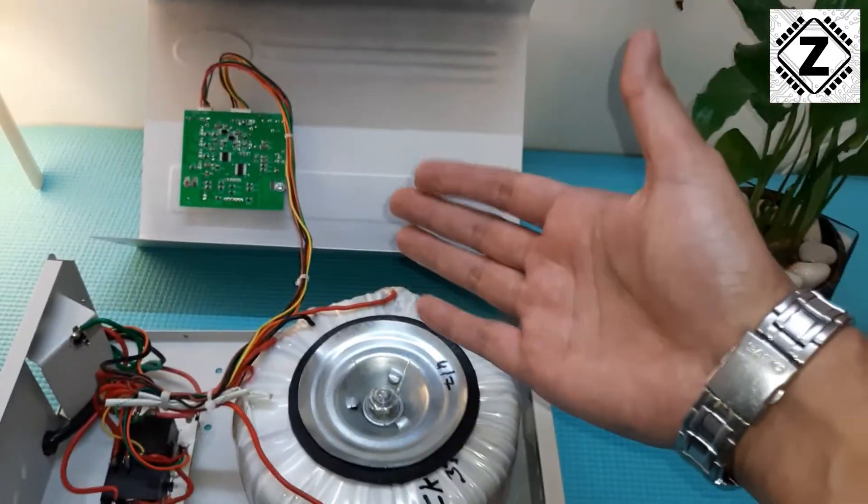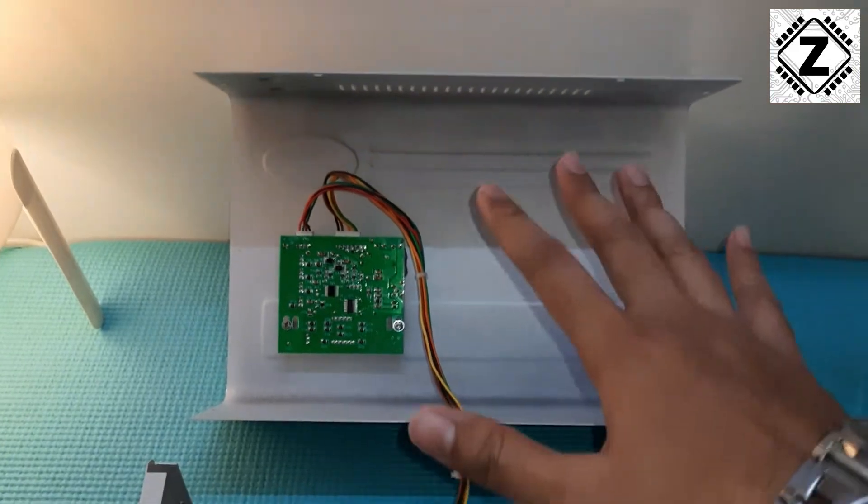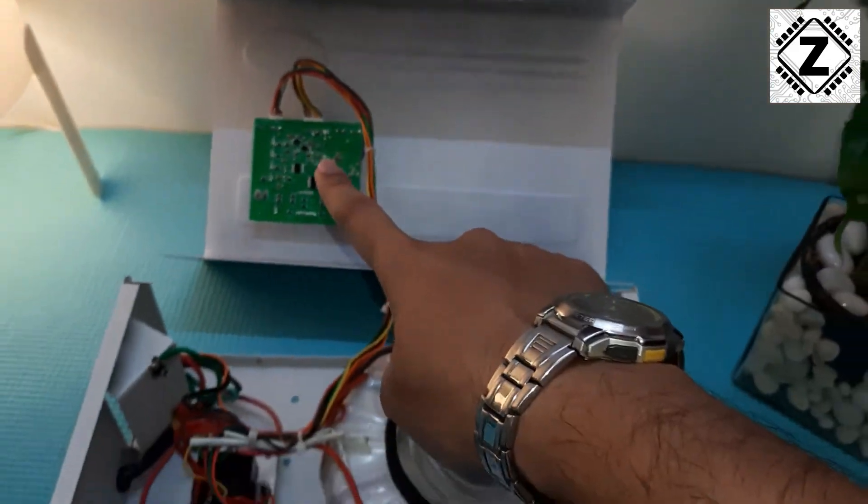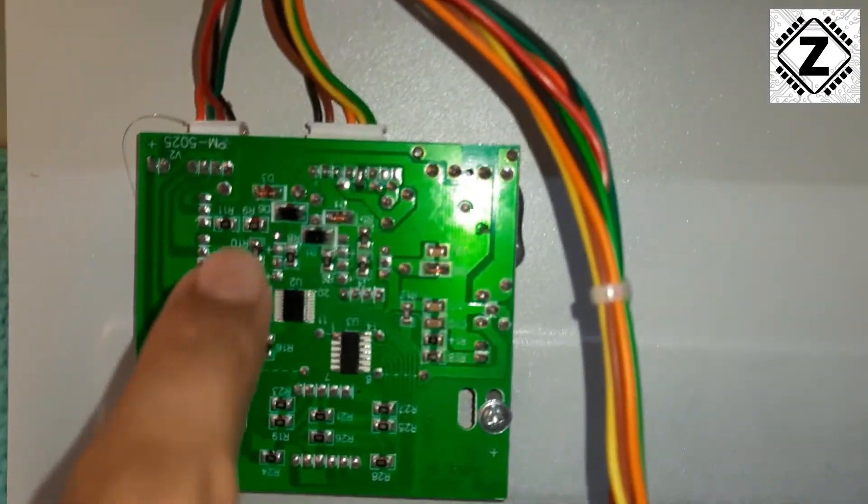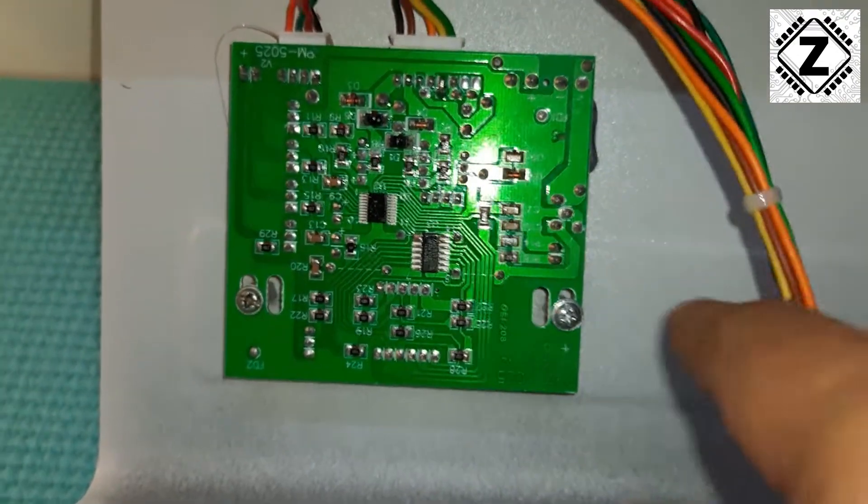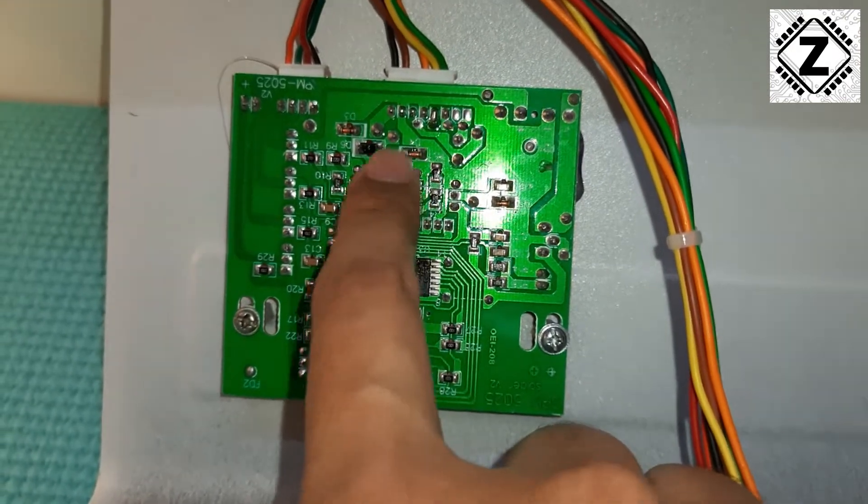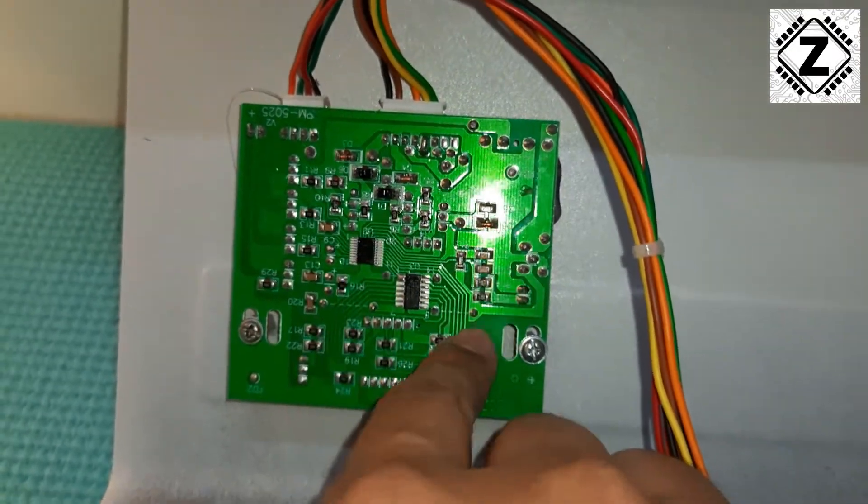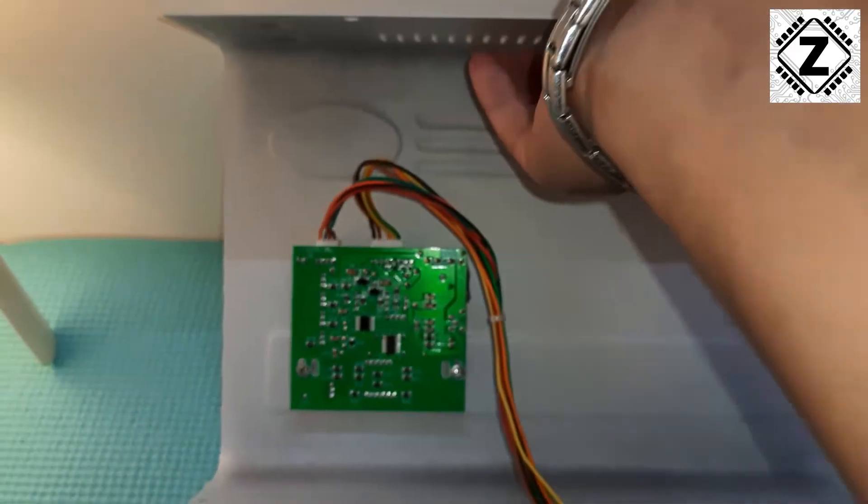So it is going to decide like, oh, the input voltage is very low, let's step it up. Again, it will decide if the input voltage is pretty high, let's bring it down. So that is what this thing is going to do. Let's take a close look at this thing. So this is the PCB of this stabilizer. You can see there are a lot of microchips, microcontroller ICs, different diodes, resistances, all of this.